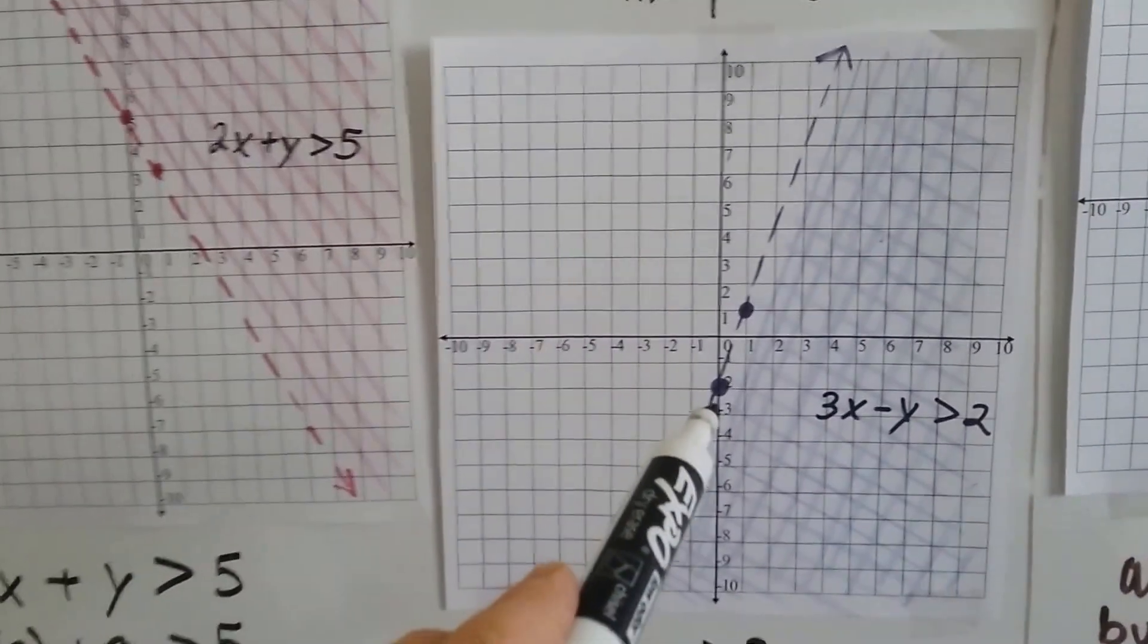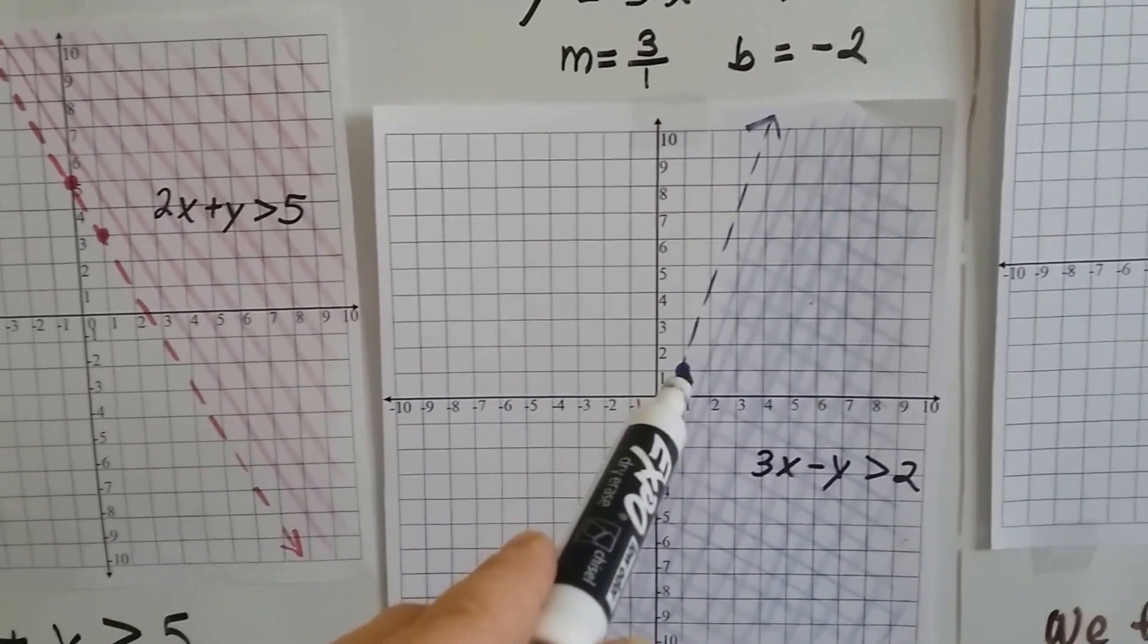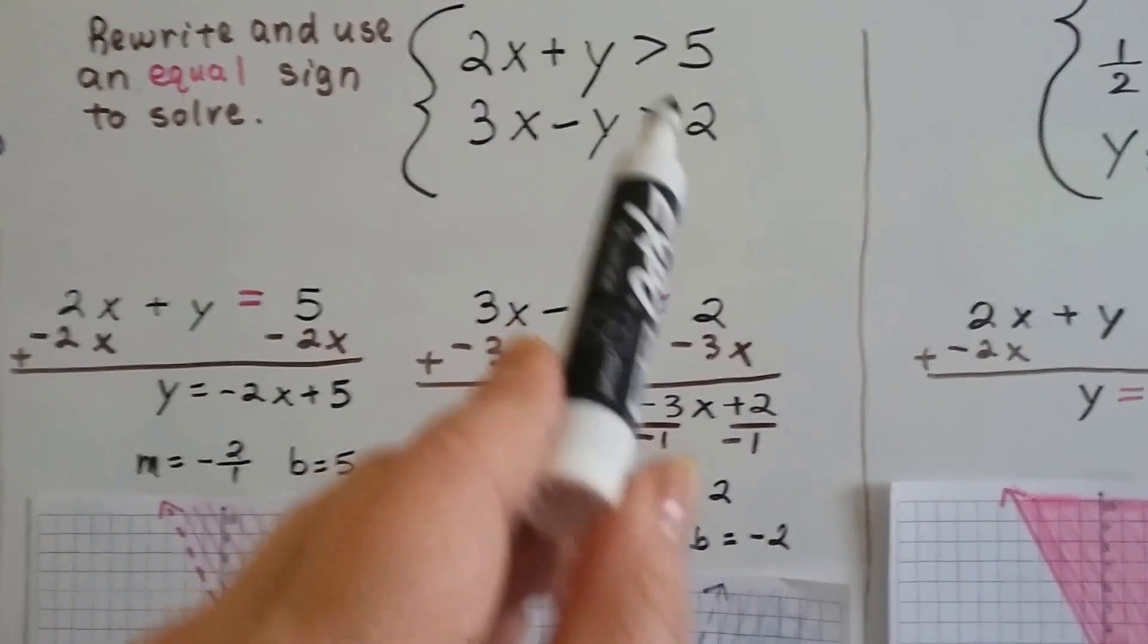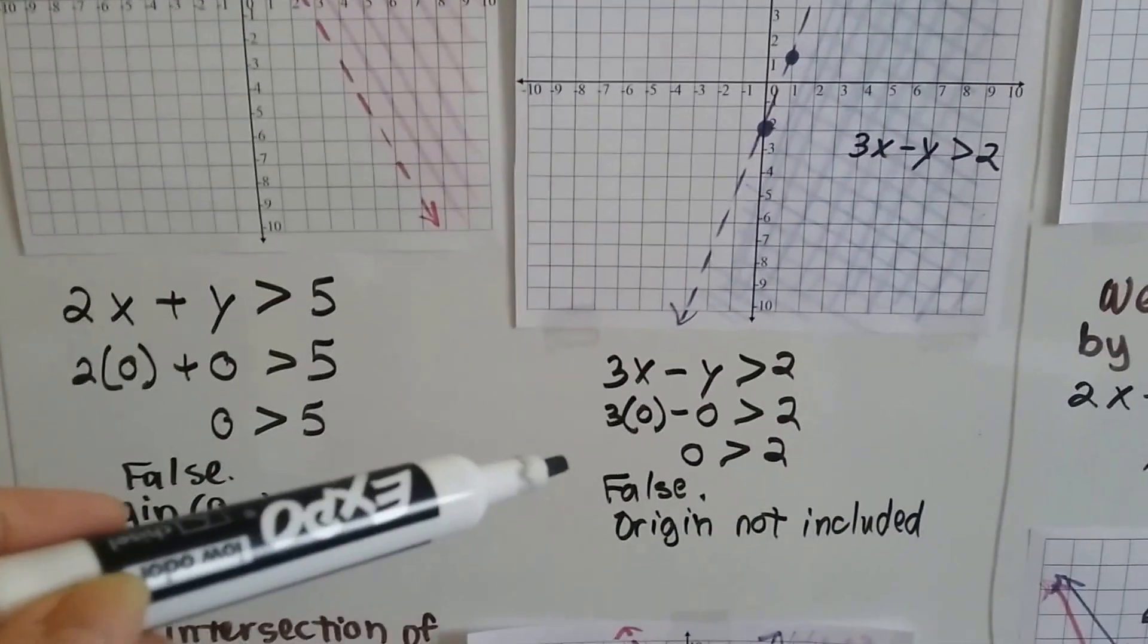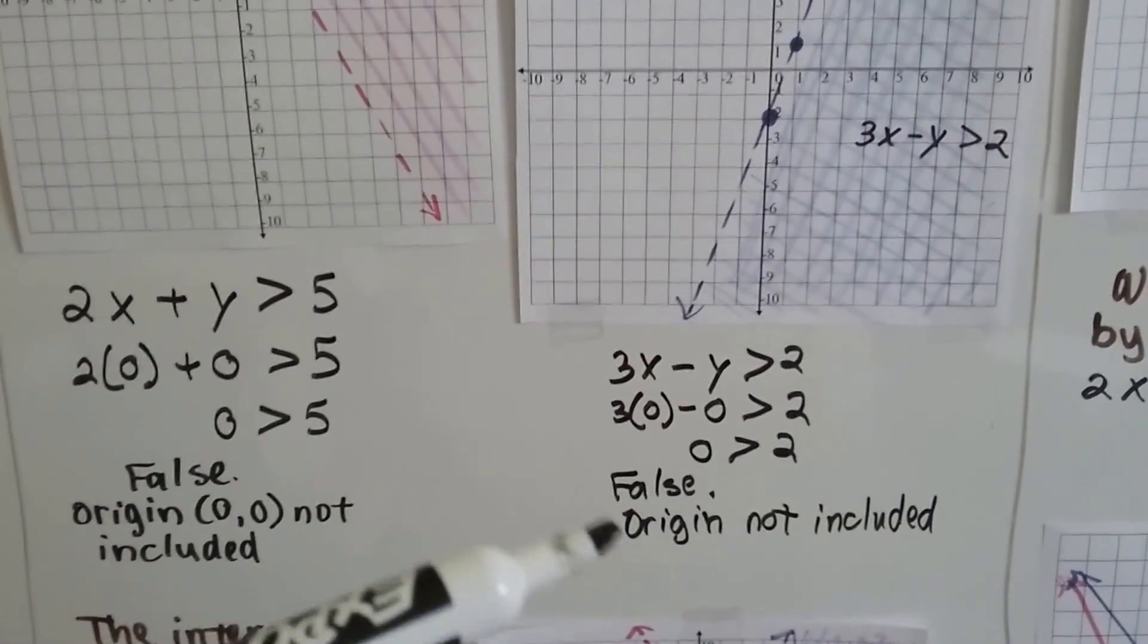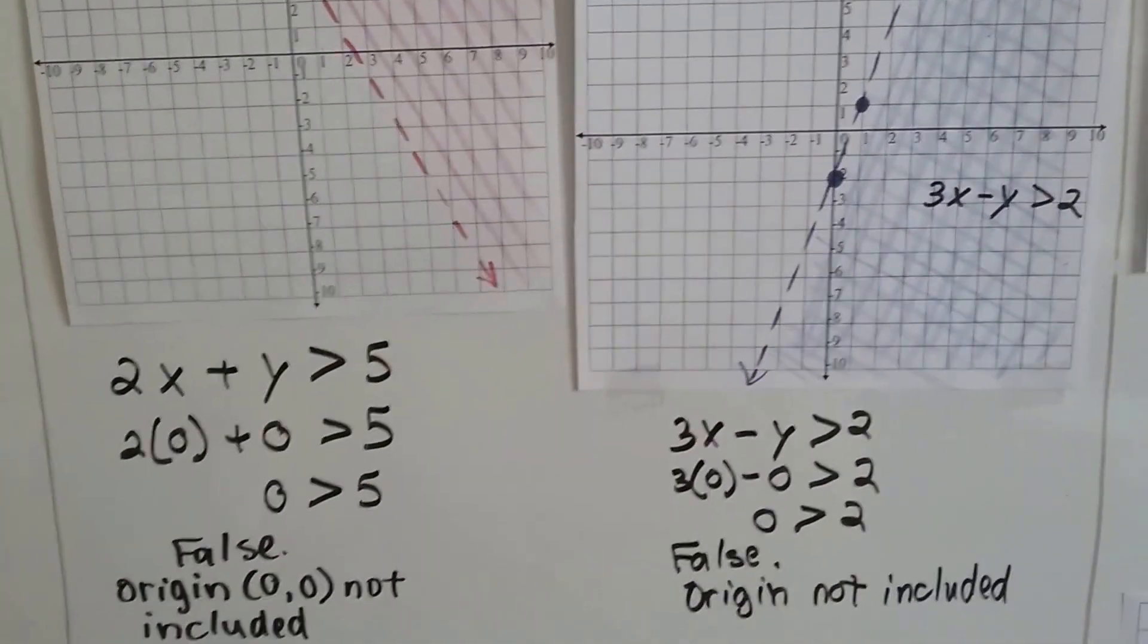It's a 3 rise over a 1 run, and it's going to hit the y axis at negative 2. We draw a point at the negative 2, and we do a rise of 3 and a run of 1, and we get this point. And we draw a dotted line again, because it doesn't have or equal to. It's just greater than. We plug in the 0, 0 again. We find out that it's false. 0 is not greater than 2, so the origin is not included. We color this side.